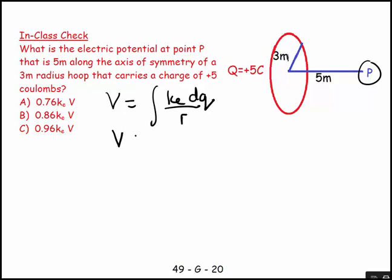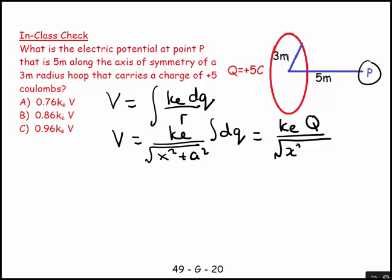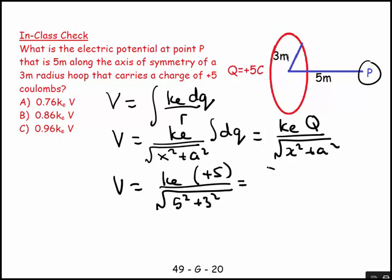And so I say, V is equal to the KE's a constant, and then we get the square root of X squared plus A squared times the integral of DQ. And this equals KE times the total charge over the X squared plus A squared. So V is equal to KE, and then this total charge is plus 5 over the square root of, and this is going to be 5 squared plus 3 squared, which equals, let's turn it around, 5KE over, 5 times 5 is 25, 3 times 3 is 9, that makes 34, the square root of 34.